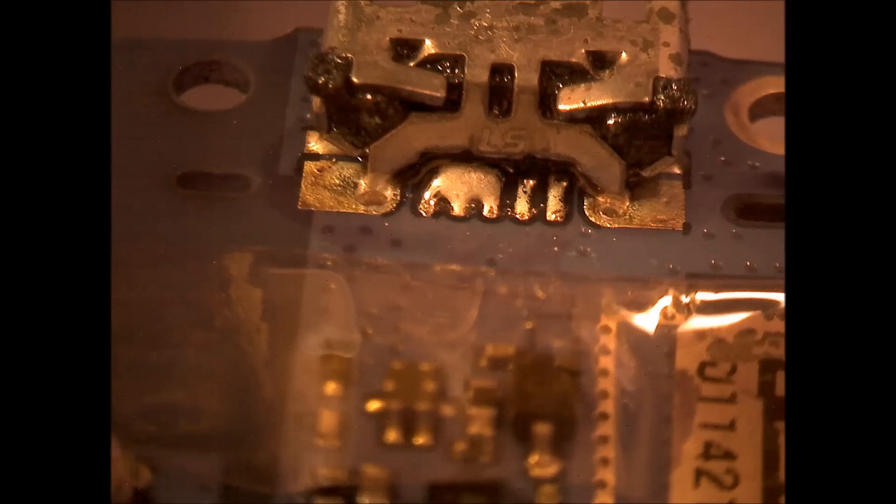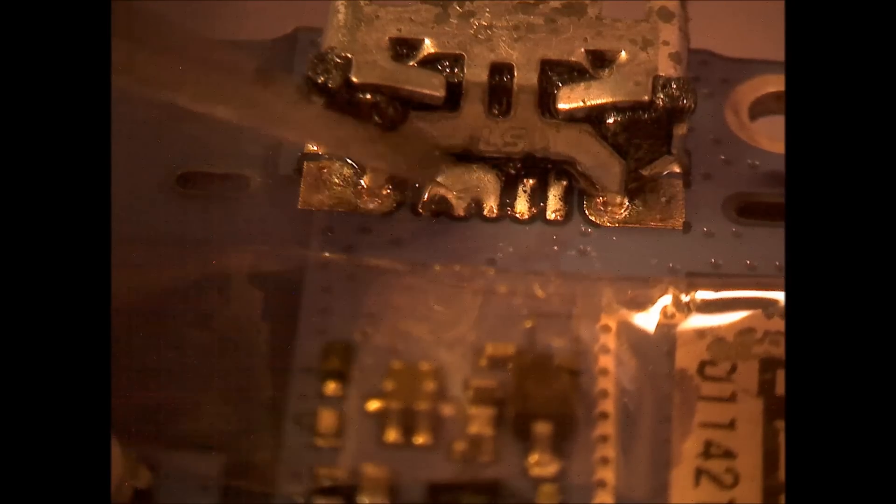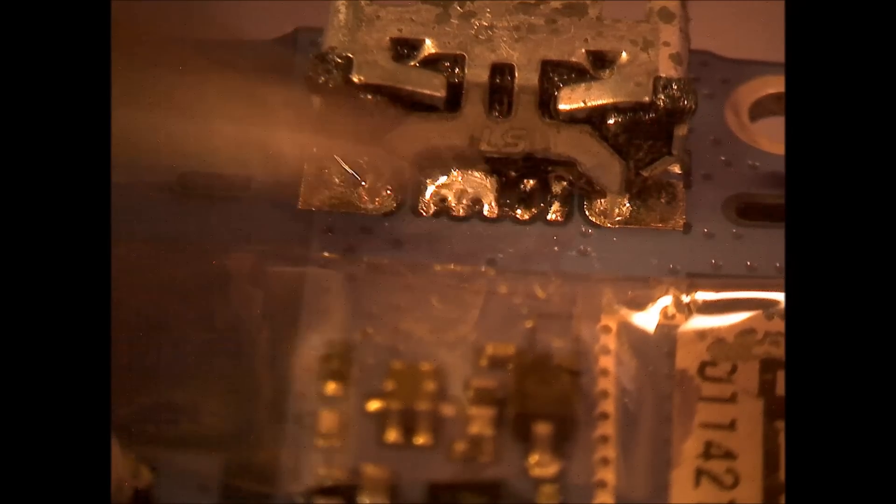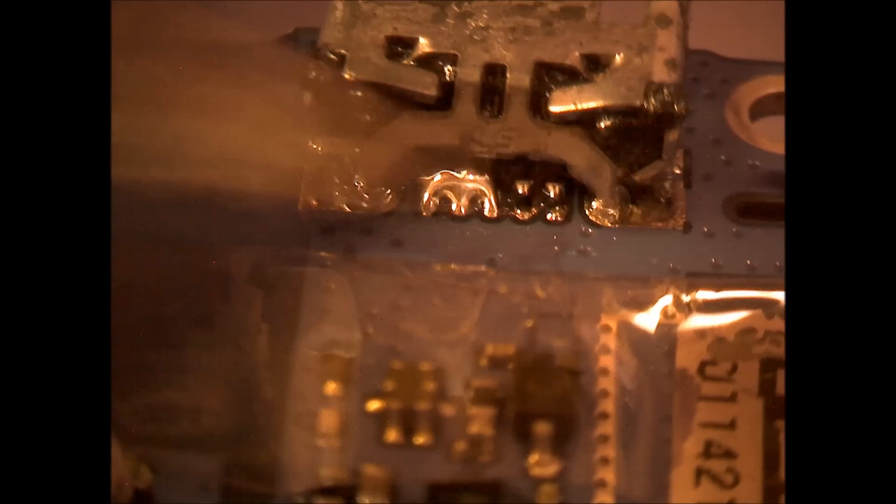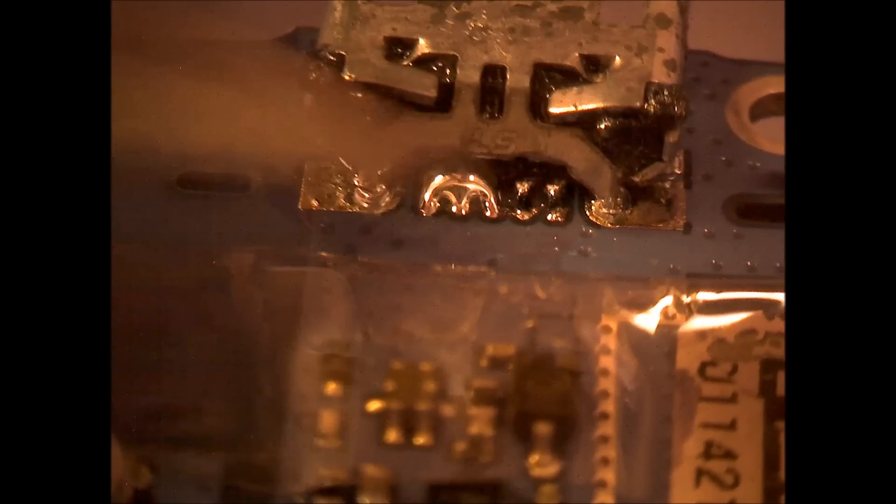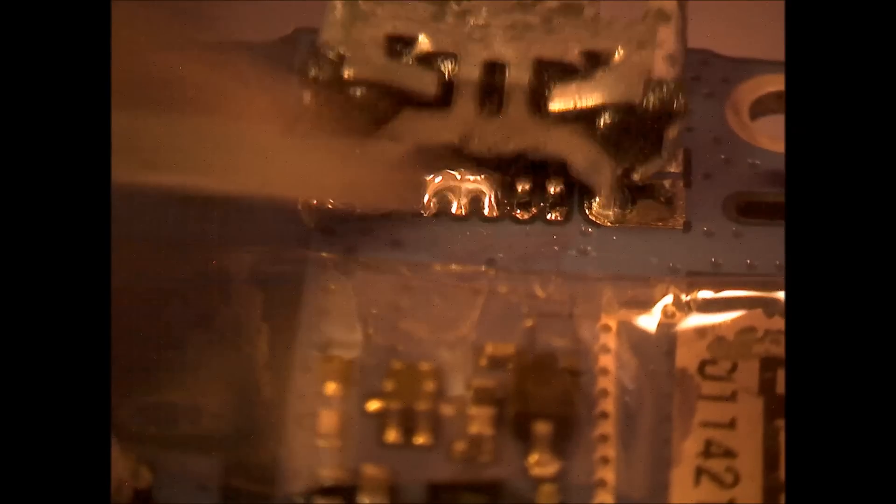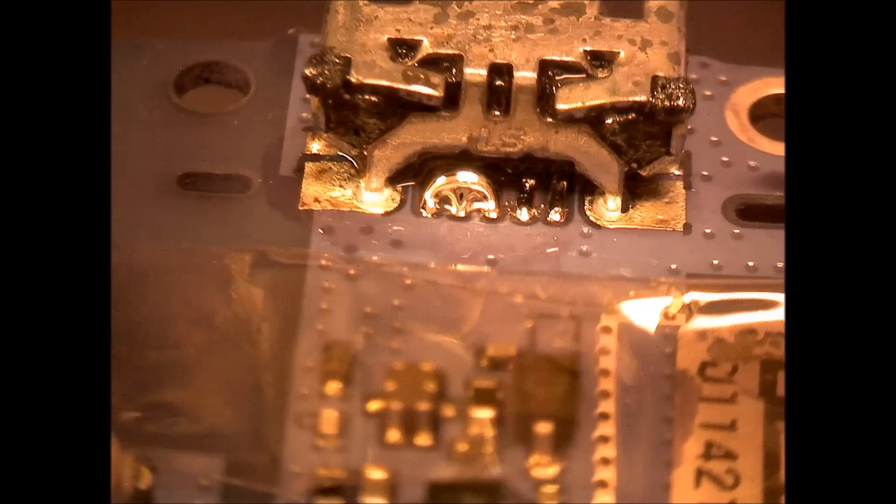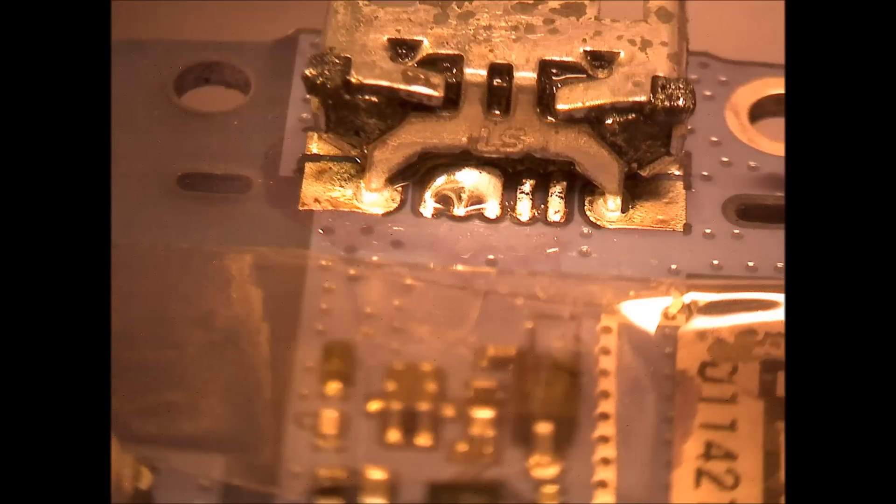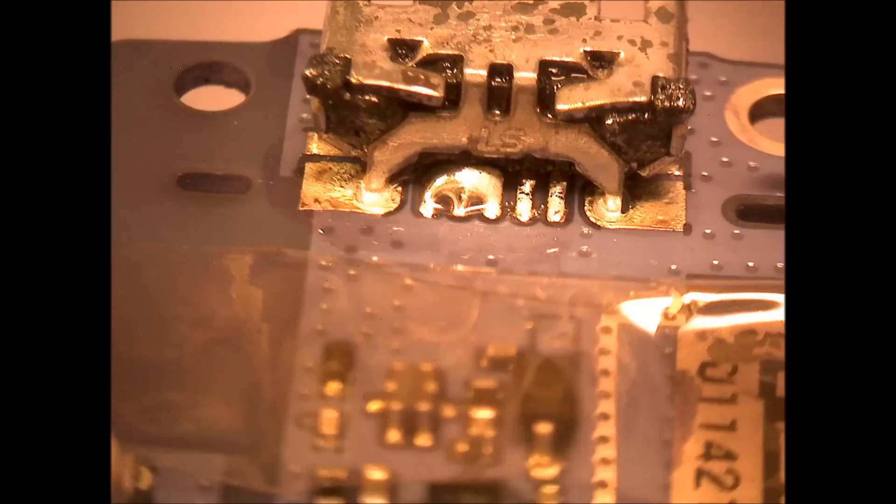You can kind of tell whenever it solidifies there, it gets dull, and then it gets shiny whenever it melts. Right here is just kind of trying to move that over using an Exacto knife just to try to gently move that over, and it wasn't doing it.